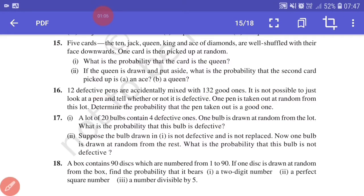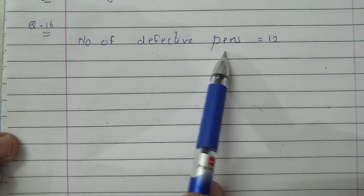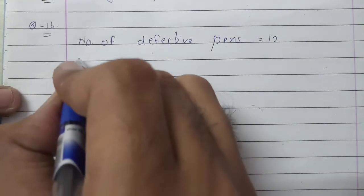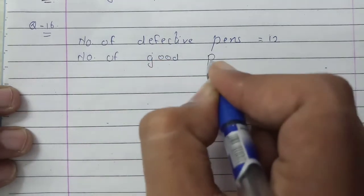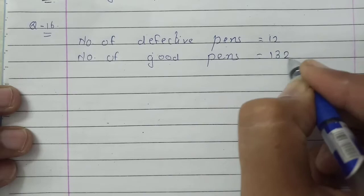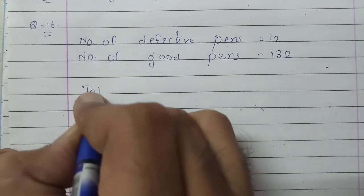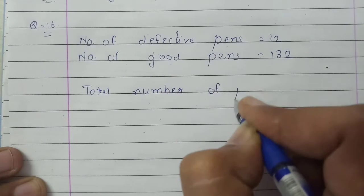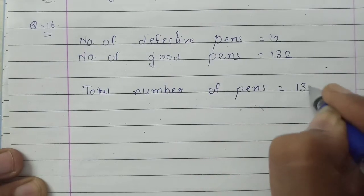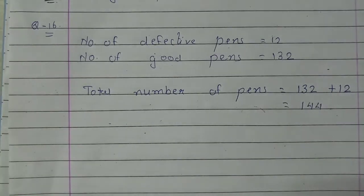Let us solve this. As given in the question, the total number of defective pens is 12, and the number of good pens is 132. So the total number of pens is 132 good ones plus 12 defective ones, which equals 144.